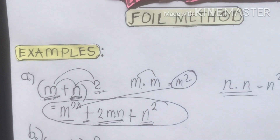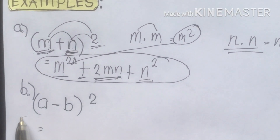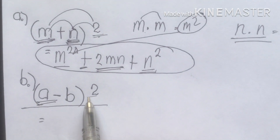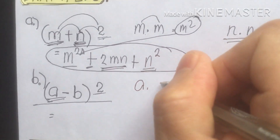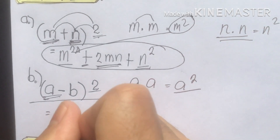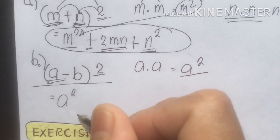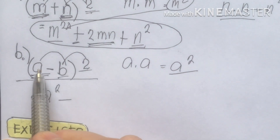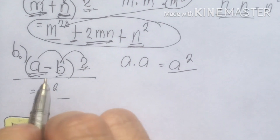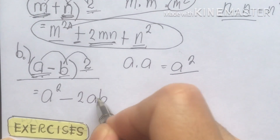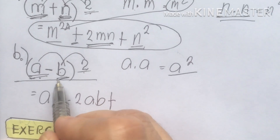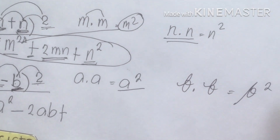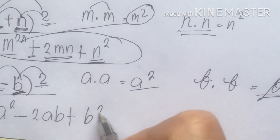For letter B, we have (a − b) squared. Get the first term: a times a gives a squared. Then in the middle, since it's minus, we have a times b times two. Get the product of the first and second term then multiply by two, giving 2ab. Then multiply the second term: b times b gives b squared.